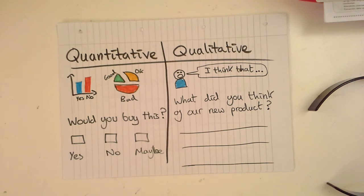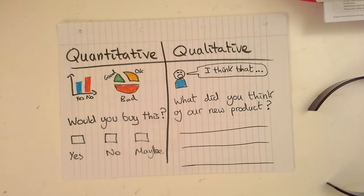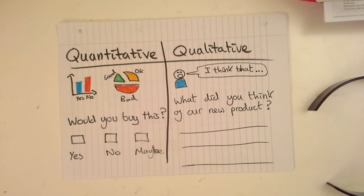For example, closed questions could include: would you buy our new packet of crisps, would you enjoy this flavour, or asking them to rate it from a scale of one to ten. Another example could be asking a customer to rate their shopping experience from one to ten. The respondent can only choose from numbers one to ten — they can't give a detailed personal response like describing helpful cashiers.